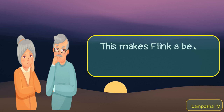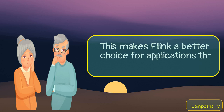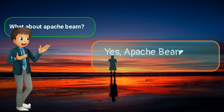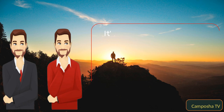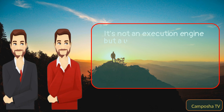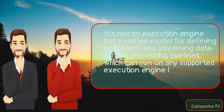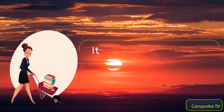This makes Flink a better choice for applications that require real-time results. Now, what about Apache Beam? Apache Beam is quite different — it's not an execution engine, but a unified model for defining both batch and streaming data parallel processing pipelines, which can run on any supported execution engine like Spark, Flink, or Google Cloud Dataflow. It's written in Java, but also has SDKs for Python and Go.